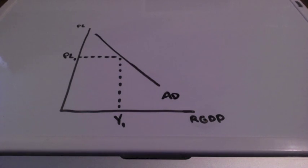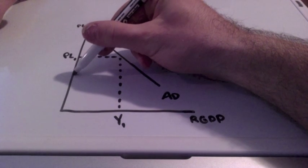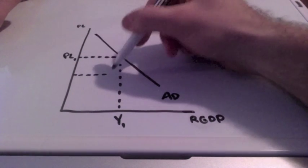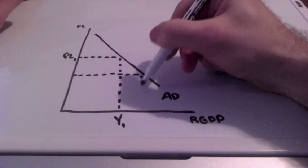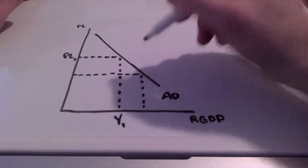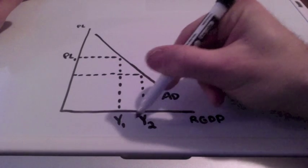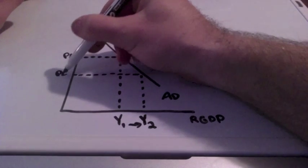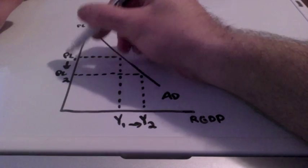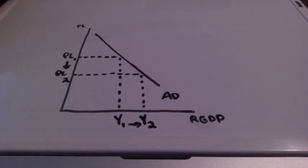We previously discussed that there is an inverse relationship between price levels and GDP when dealing with the aggregate demand curve. So in this situation when our price levels decrease from PL1 to PL2 it's going to increase our GDP from Y1 to Y2. Price levels go down, GDP will increase.